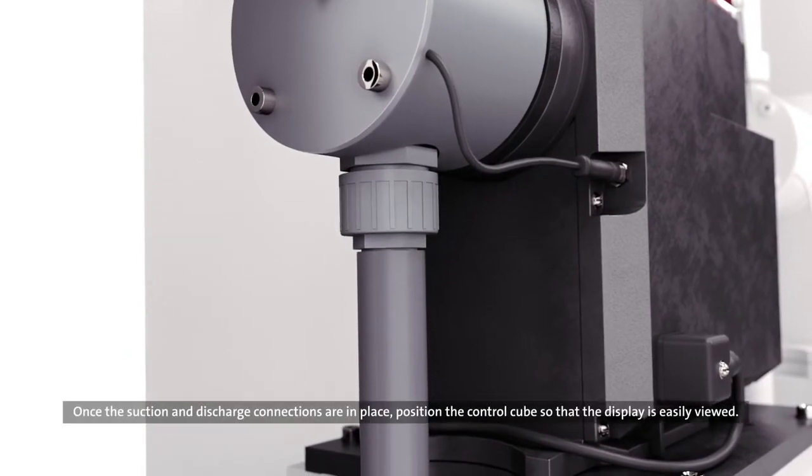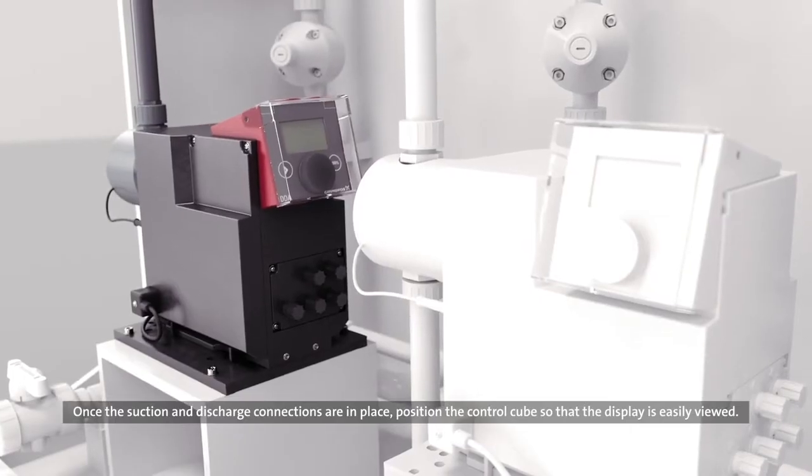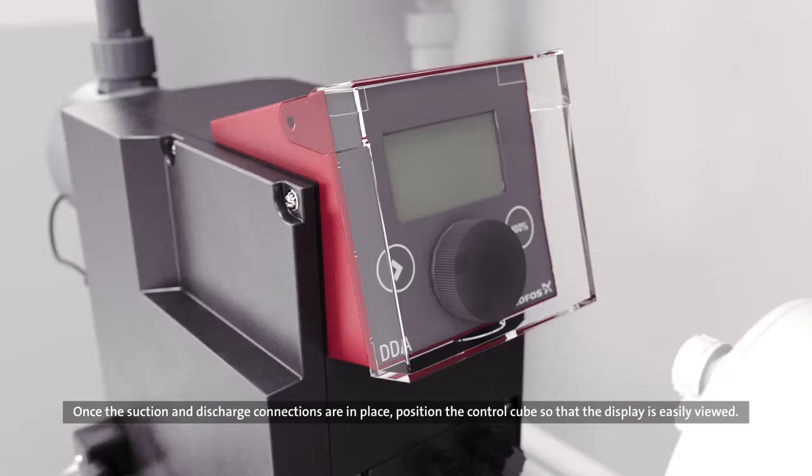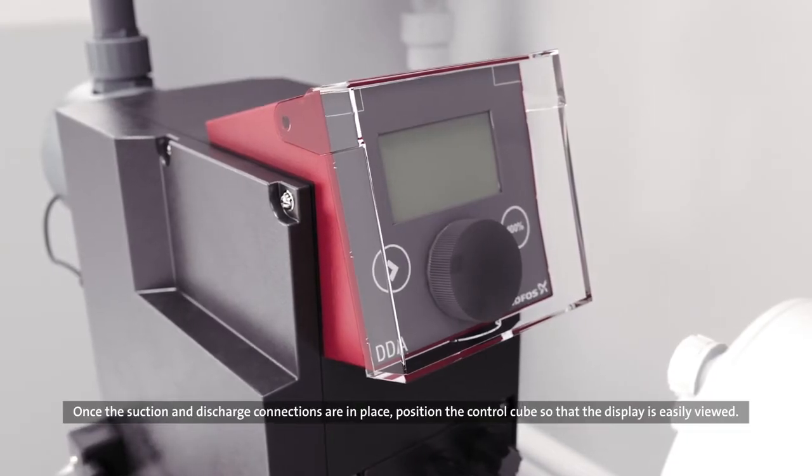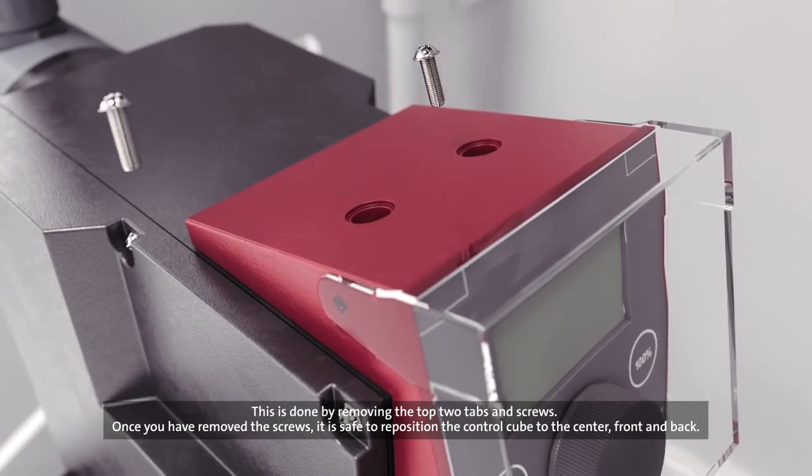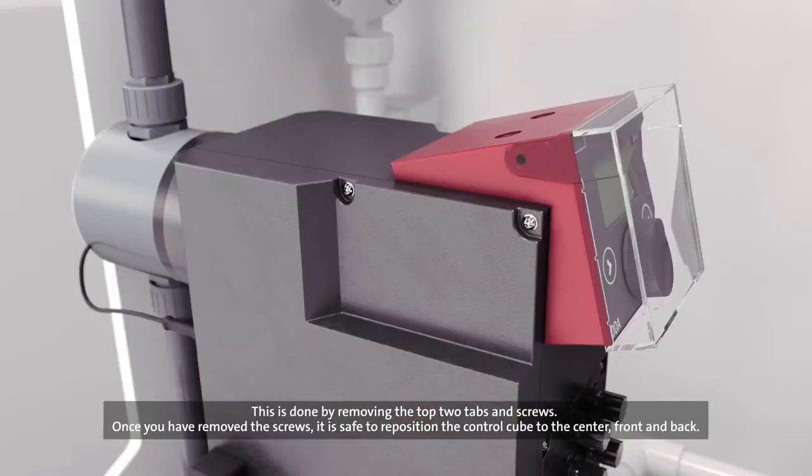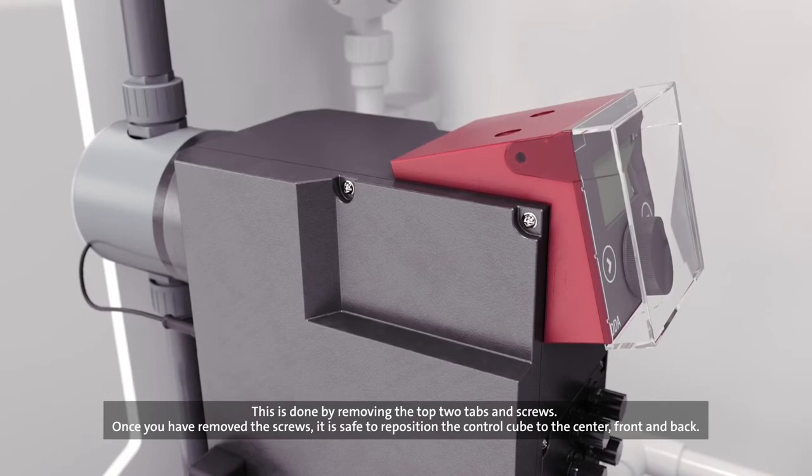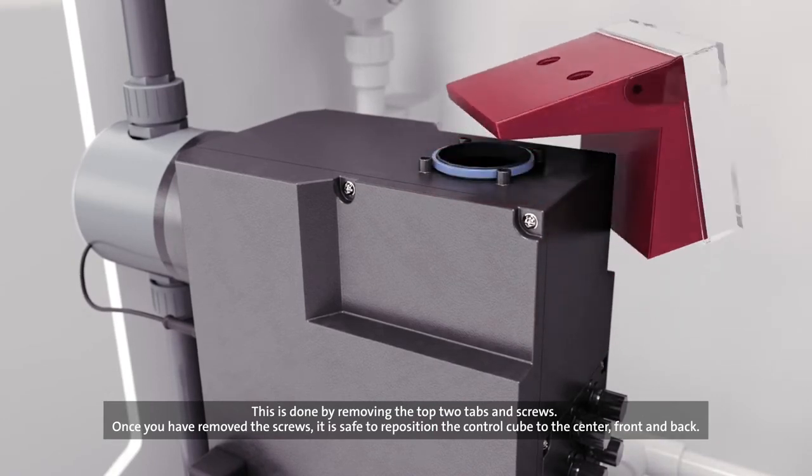Once the suction and discharge connections are in place, position the control cube so that the display is easily viewed. This is done by removing the top two tabs and screws. Once you have removed the screws, it is safe to reposition the control cube to the center, front, and back.